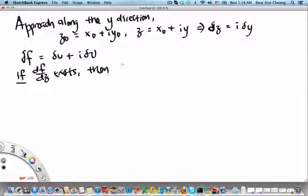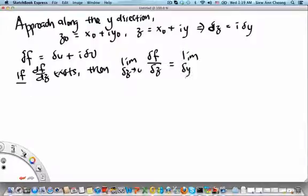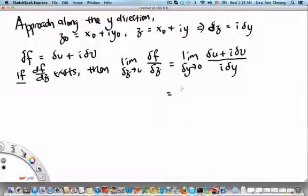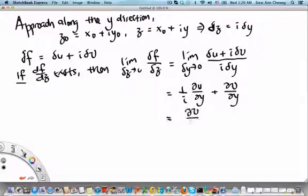Then in the limit of delta z going to 0, delta f over delta z will be the same as the limit of delta y going to 0 of (delta u + i delta v) divided by i delta y. This should equal 1/i times (∂u/∂y + ∂v/∂y), which we can write as ∂v/∂y - i∂u/∂y. And this is the value of the derivative if we approach z0 along the y direction.